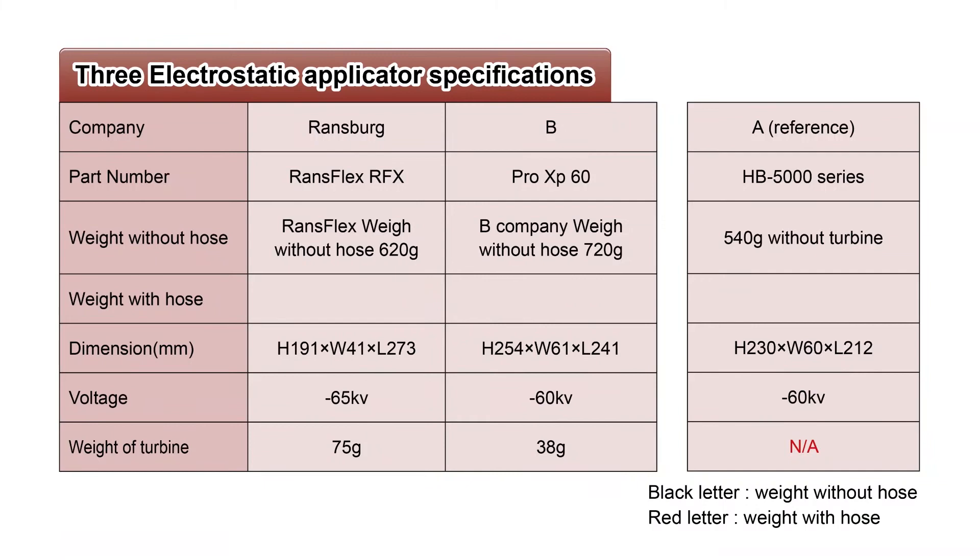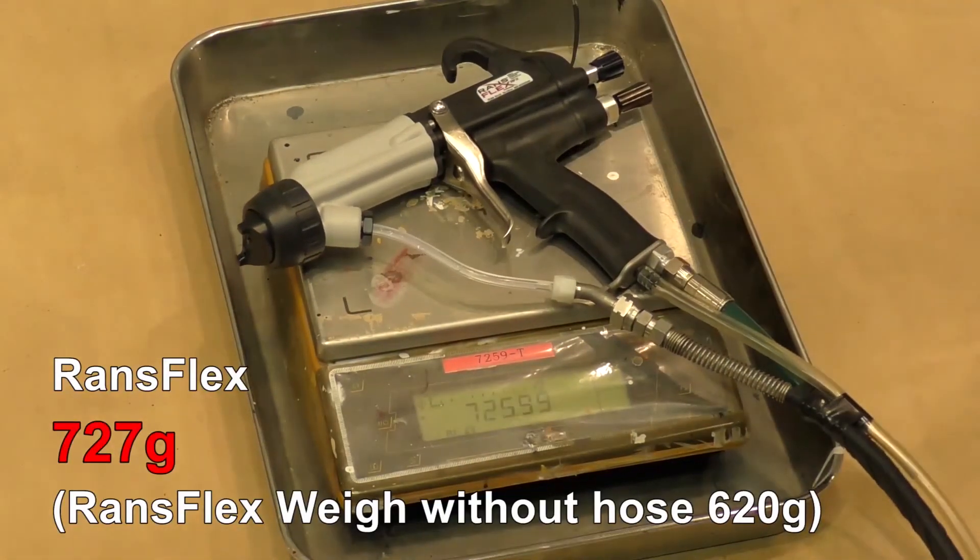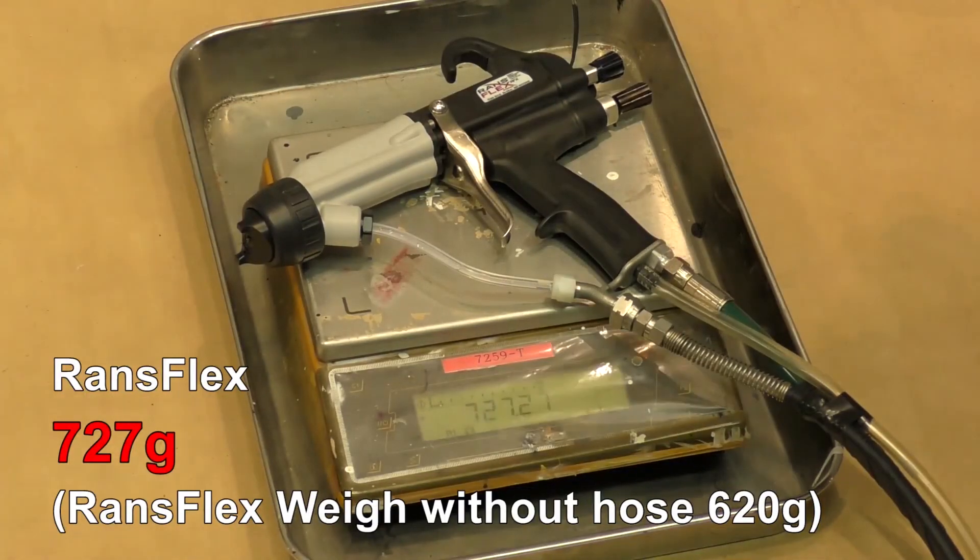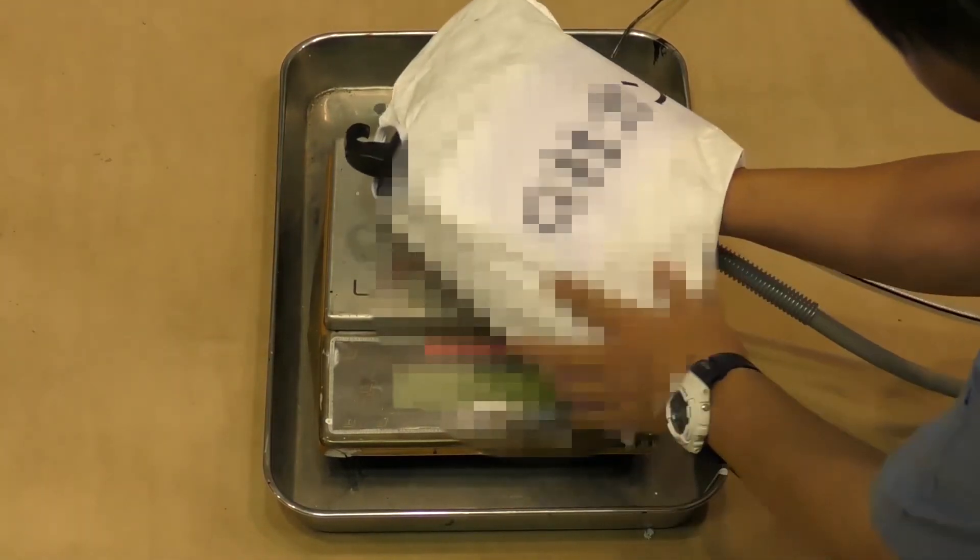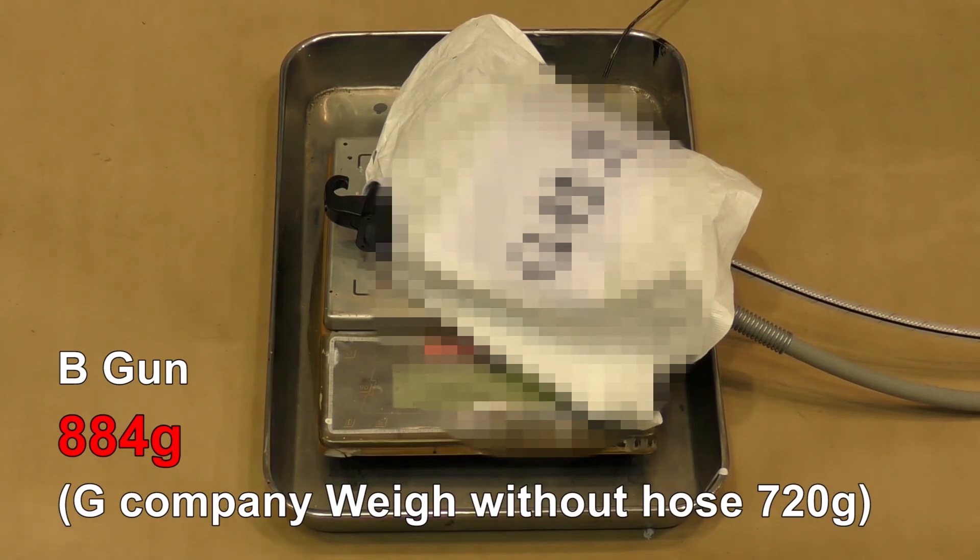Comparing the specifications of three guns. Let me give some additional explanation for weight. The chart specifies the weight of the single gun assembly. However, painters actually spray with the gun with air hose and paint hose connected while working. Compared with Brand B that has a similar air-driving turbine inside the gun as with RansFlex, RansFlex is lighter than Brand B. We measure the gun weight with air and paint hoses connected.